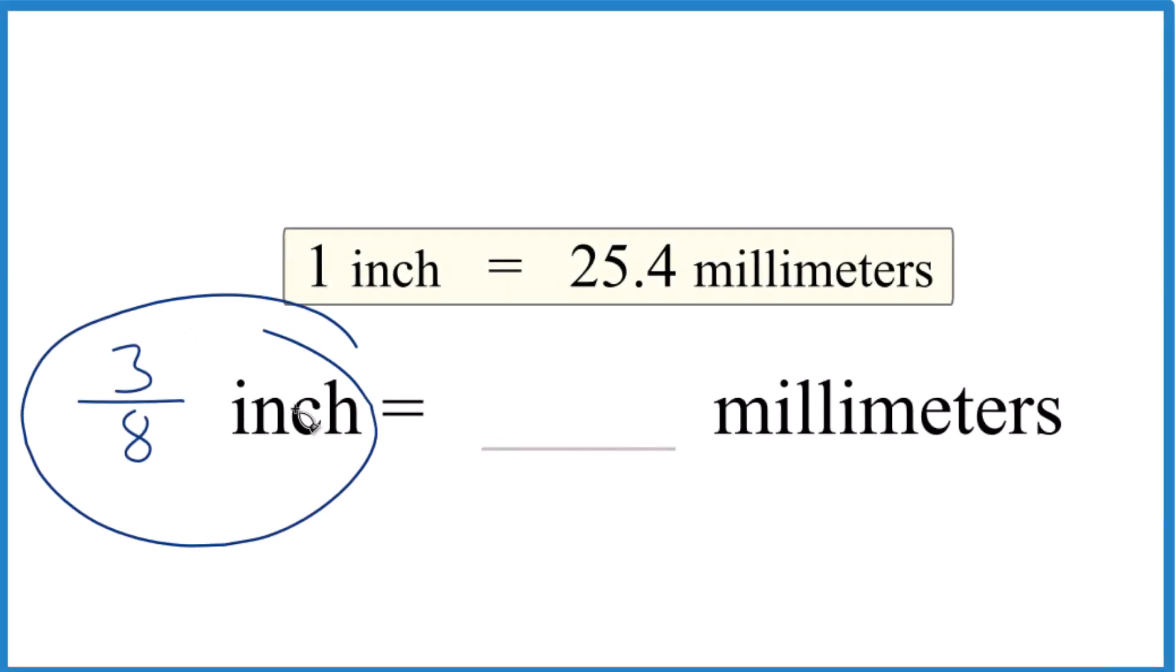Let's convert 3 eighths of an inch to millimeters. So here's how we do it. We know that one inch is 25.4 millimeters.